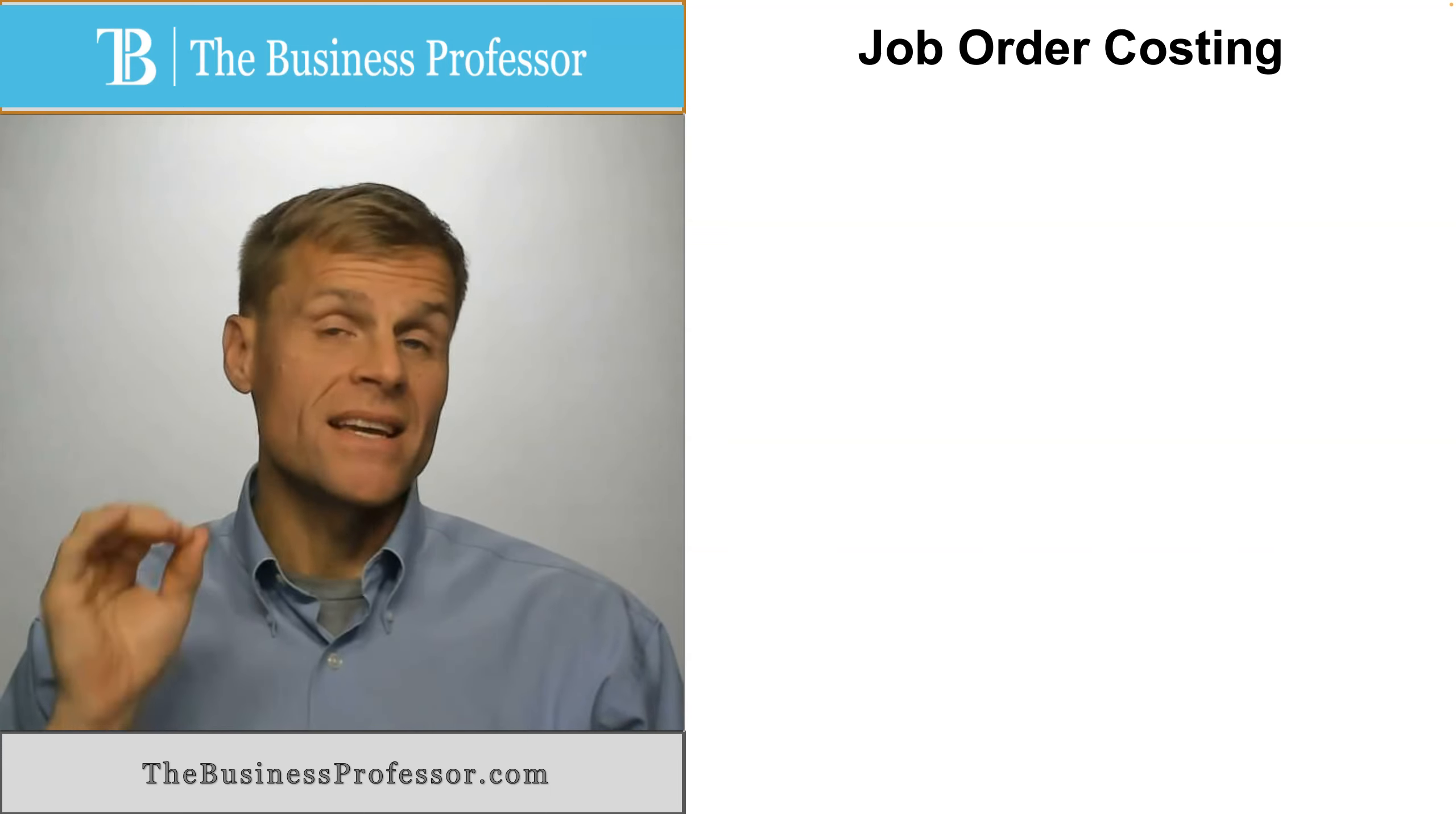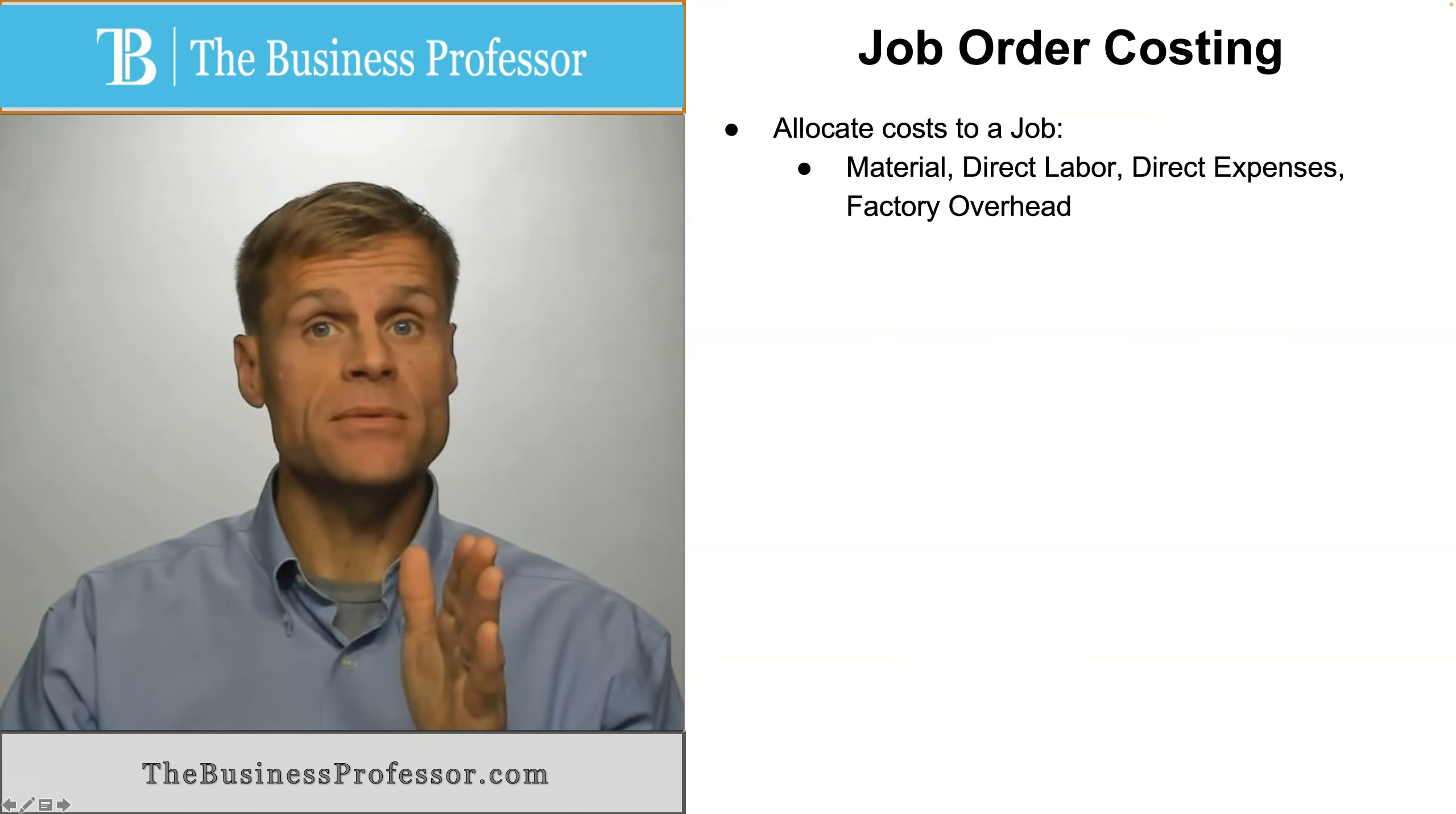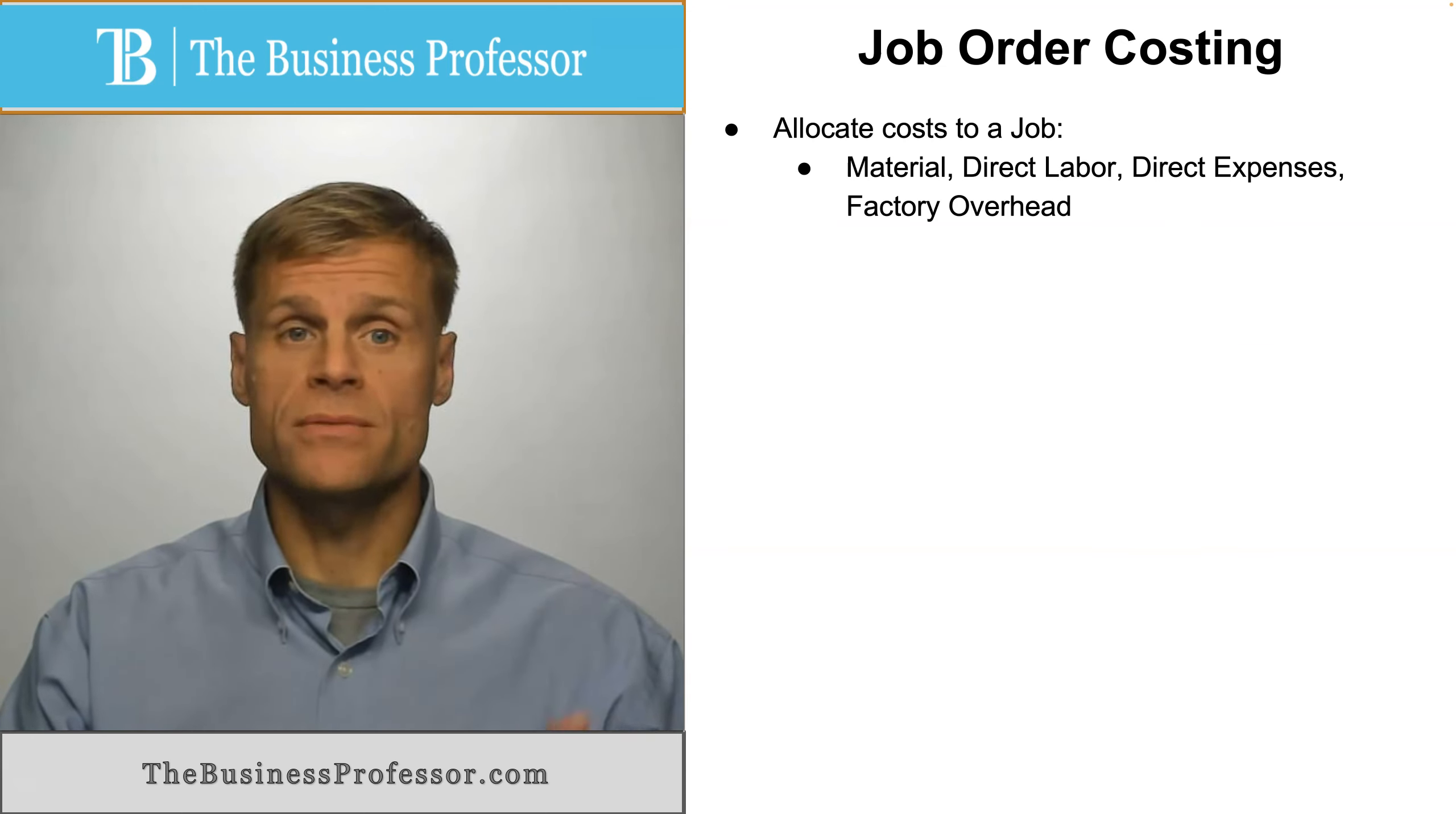What is job order costing? Job order costing is generally the allocation of certain types of expenses to a specific job. This includes material, direct labor, direct expenses, and factory overhead.